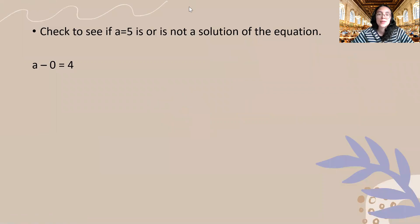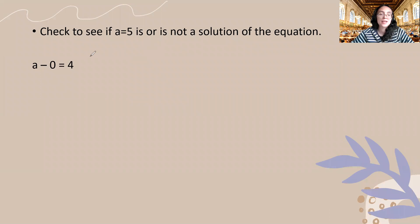We are asked to check the possible solutions for this equation. A minus zero is equal to four and our given variable is a and our value is five. So what we're going to do is we're going to substitute, simplify, and then make a conclusion if a is equal to five is a solution for this equation.